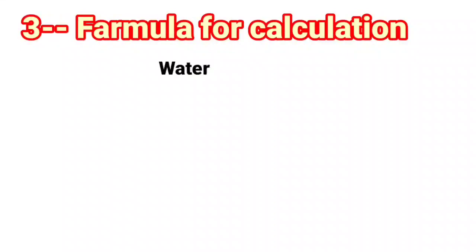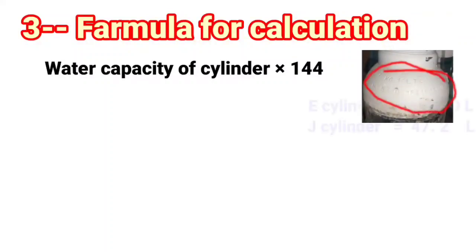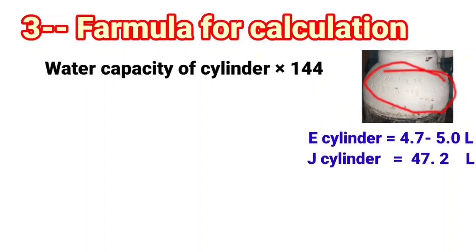Third formula for calculation is water capacity of cylinder multiply by 144. According to this formula, first we will find the water capacity of cylinder, which is mentioned by the manufacturer on the neck of cylinder. The water capacity of E-size cylinder is 4.7 to 5 liters, and J-cylinder 47.2 liters.